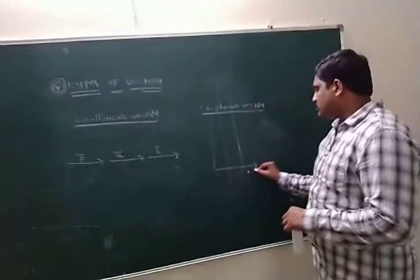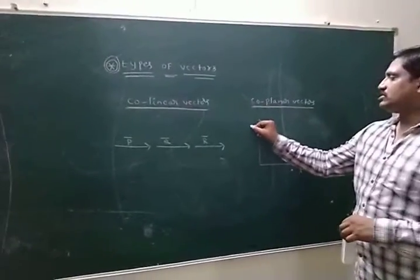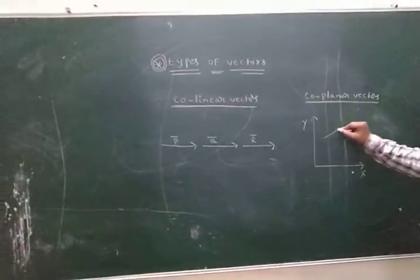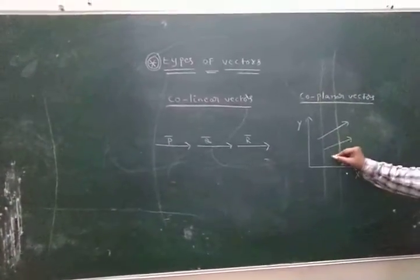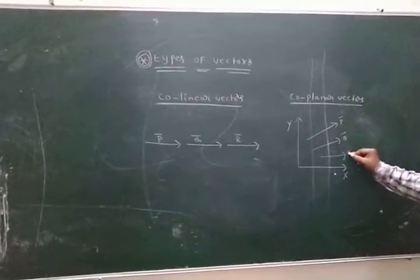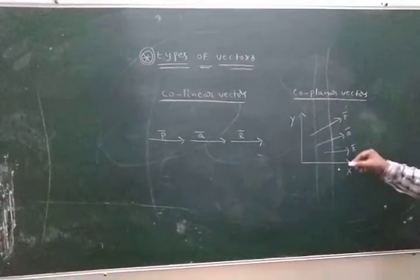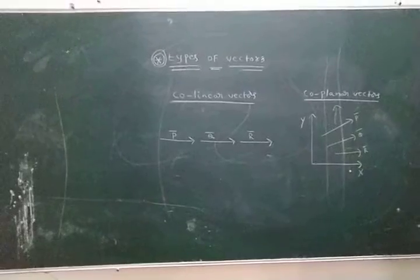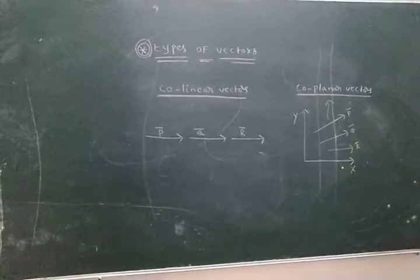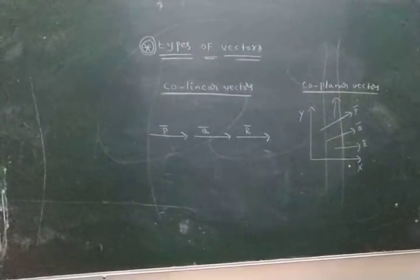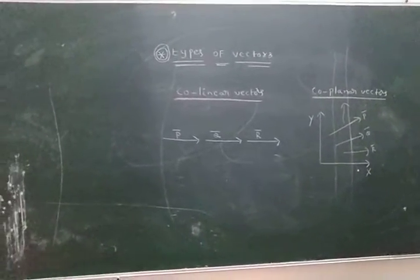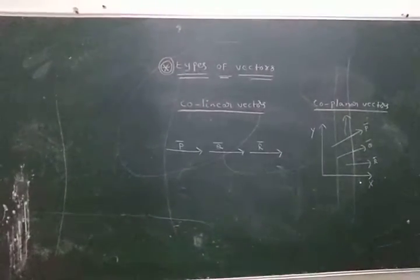This is the x-axis, this is the y-axis, and this is called the xy-plane. This is one vector, this is another vector, this is another vector. Those vectors lie in the same plane — these vectors are called coplanar vectors. All vectors lying in the same plane are called coplanar vectors.